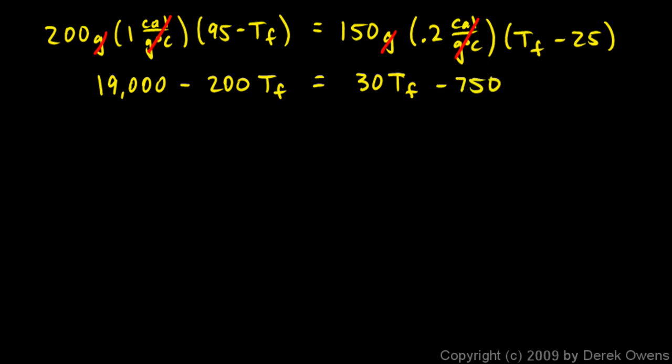Now we have an algebra equation like ones from Algebra 1. There's a negative 200 Tf on one side and a 30 Tf on the other. To solve for Tf, I add 200 Tf to each side so those cancel out. And I add 750 to each side so those cancel out.